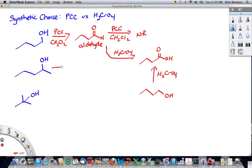Otherwise, they're pretty much the same. Secondary alcohols will react with PCC, dichloromethane, or chromic acid to give ketones.